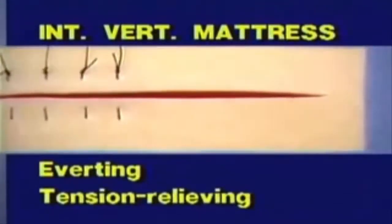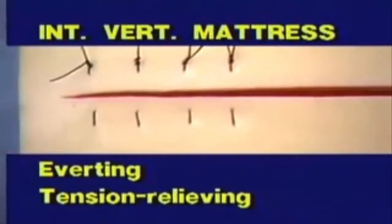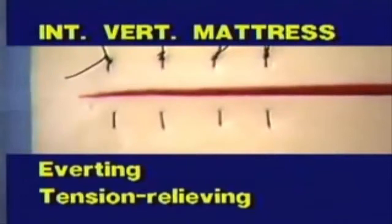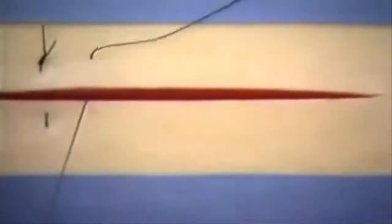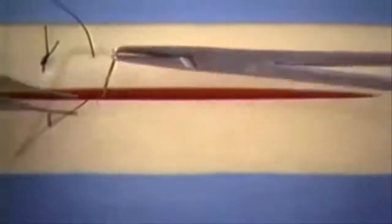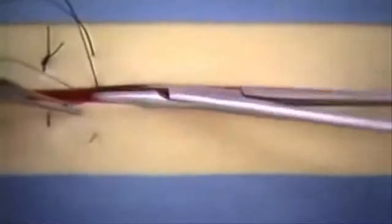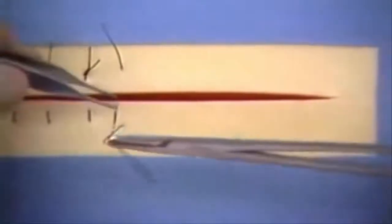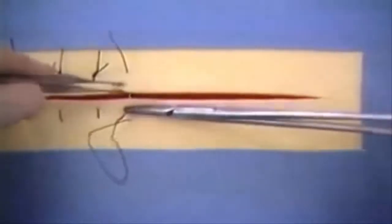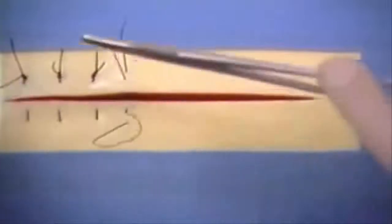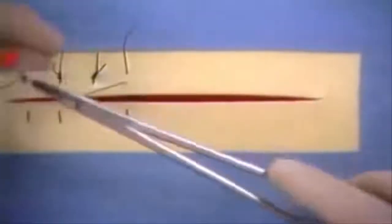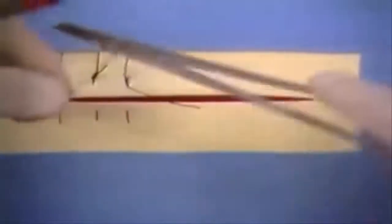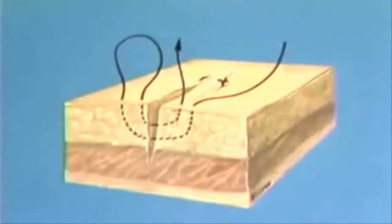The eighth pattern to be demonstrated is the interrupted vertical mattress suture. This is an everting and tension relieving suture pattern. The vertical mattress suture is introduced eight to ten millimeters from the incision on one side, passed across the incision line, and made to exit an equal distance on the opposite side of the incision. The needle is then reversed and returned perpendicular to the incision line to the opposite side by passing four millimeters from the incision on both sides. The knot is tied on the side of origin. This illustration shows a completed interrupted vertical mattress suture.